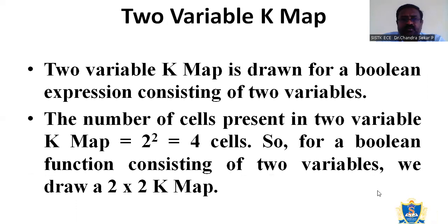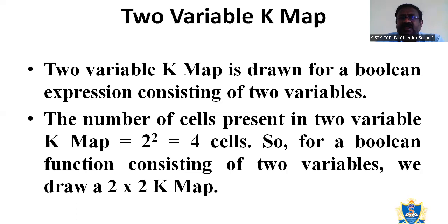There are different types of K-Maps. The K-Map simplification includes two-variable K-Map, three-variable K-Map, four-variable K-Map, five-variable K-Map, and six-variable K-Map. In today's presentation, we will be discussing up to the two-variable K-Map. The two-variable K-Map is drawn for the Boolean expression where it consists of only two variables.